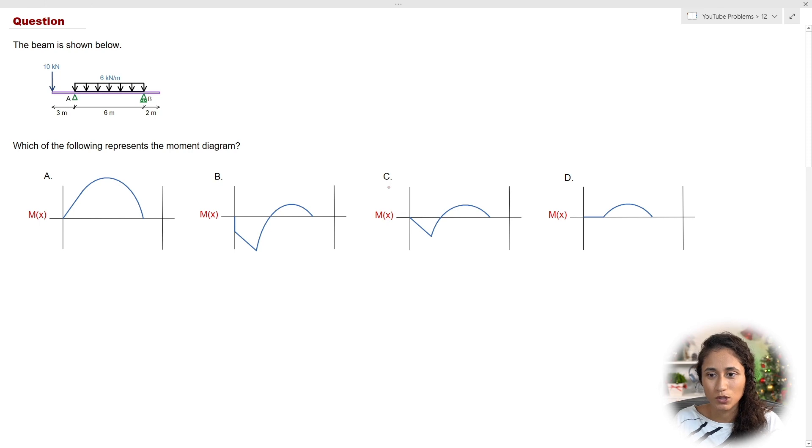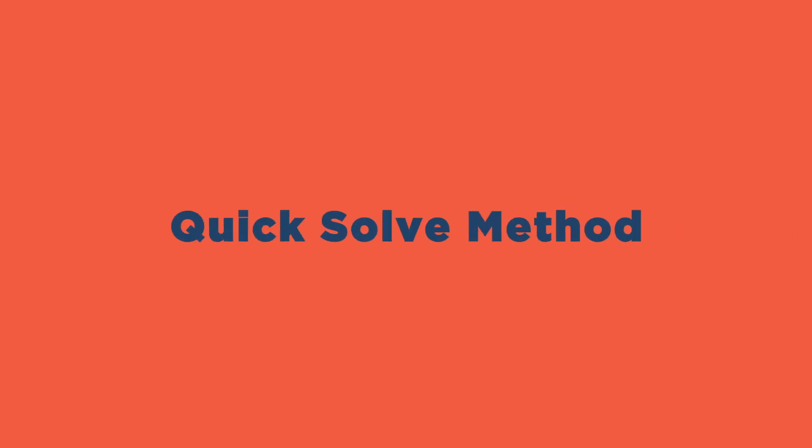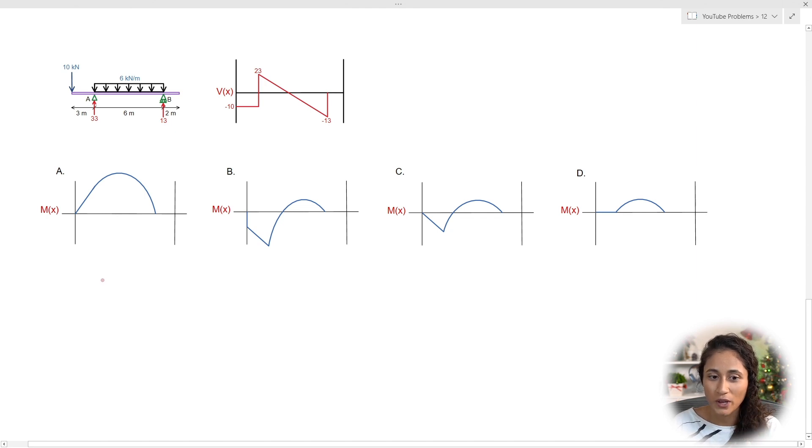Now if we take a look at the multiple choice, the answer is going to be C. There's one more thing I would like to do before we end this problem is see if we can determine the moment diagram just by looking at the beam and the shear diagram and use some of the concepts that we discussed throughout the problem.